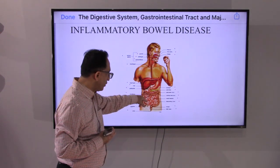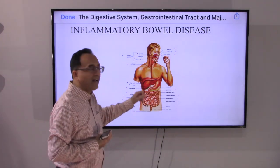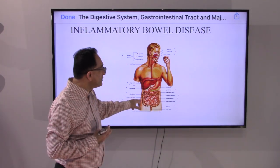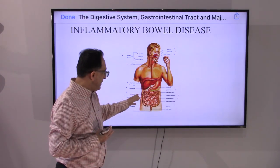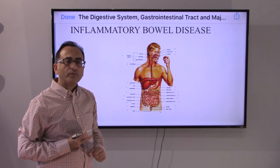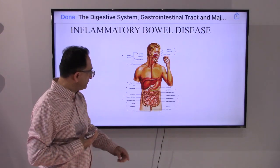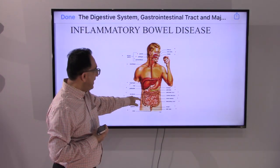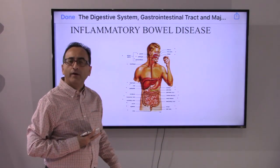That is another important distinction between ulcerative colitis and Crohn's disease. As for signs and symptoms, there are many overlaps, but ulcerative colitis is known for bloody diarrhea — blood in the stool. In Crohn's disease it is present but not to the same level as in ulcerative colitis. Surgery may help in Crohn's disease, but since it can go from top to bottom it may not completely cure the condition.